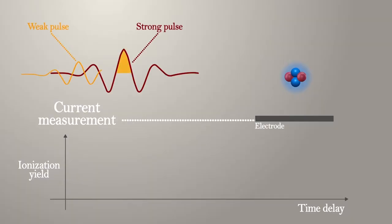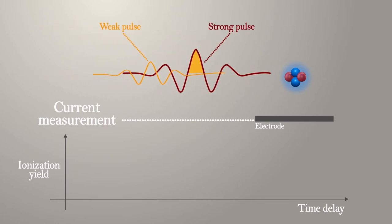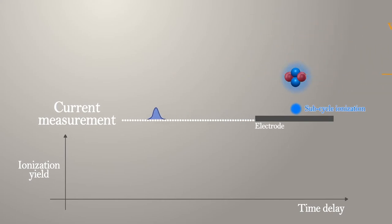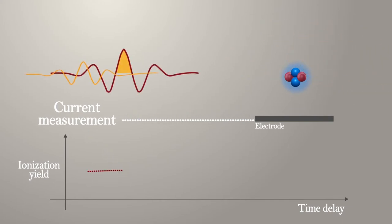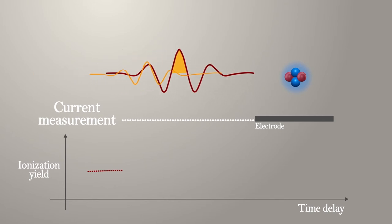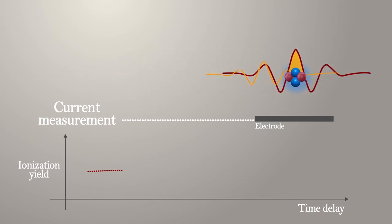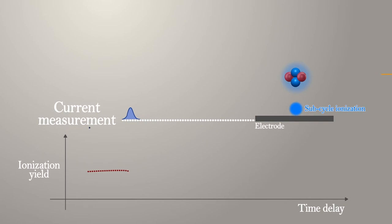Two pulses are used in this technique, one strong and the other weak. They are initially separated in time and focused in air. The air molecules are ionized at the center of the strong laser pulse. The electrons and ions are collected by the electrode, allowing us to record the ionization yield.